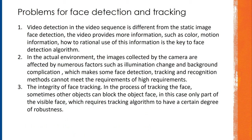The problems of face detection and tracking: video detection in the video sequence is different from static images. The video provides more information such as color and motion information. How to rationally use this information is key to the face detection algorithm. In the actual environment, images collected by the camera are affected by numerous factors such as illumination change and background complications, which makes some face detection, tracking, and recognition methods unable to meet high standards. The third issue is the integrity of face tracking — sometimes other objects can block the face, requiring the tracking system to have a high degree of rapidness.